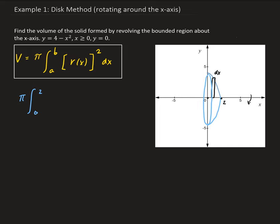Our representative piece, r of x, is just the function, 4 minus x squared. So that's the distance from the x-axis to the point on the graph. And x is going between 0 and 2.